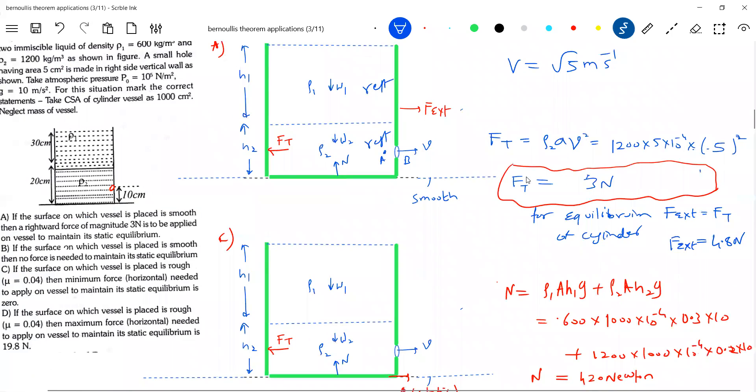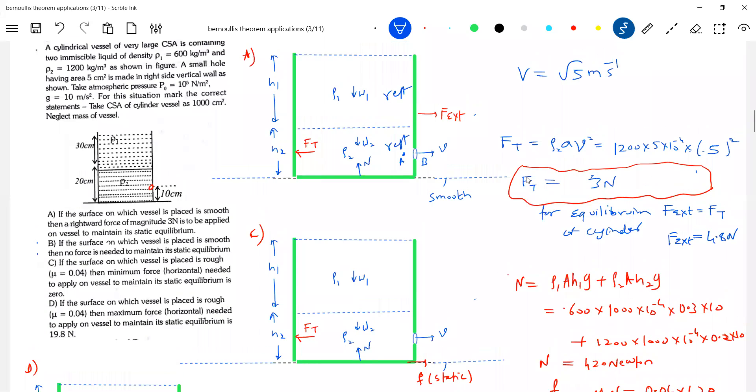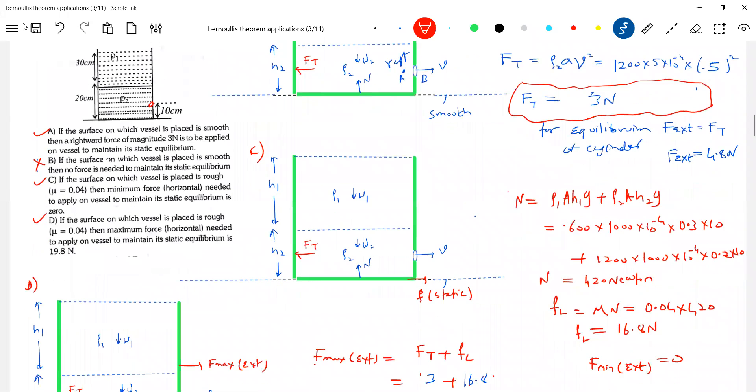If the surface of the vessel - magnitude is 3 newton is what I should apply here to keep it in equilibrium. This will be correct option. If the surface on which vessel is placed is smooth, then no force is needed to maintain its static equilibrium. This option will be wrong. If the surface on which is placed, the minimum force needed to apply on the vessel to maintain static equilibrium zero - this is correct.